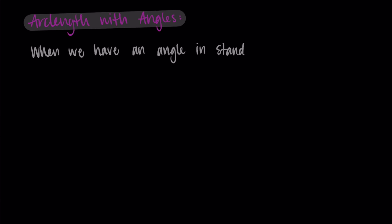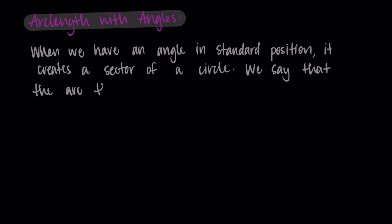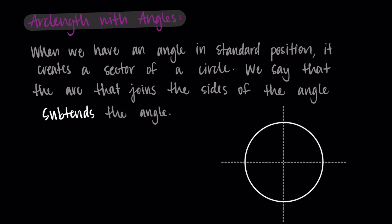So when we have an angle that is in standard position, we can think of it as creating a sector of a circle. Then we say that the arc that joins the initial side and the terminal side of the angle subtends the angle. So subtends is like the verb we're using to describe that arc that goes from one side to the other. So if we think about our circle here, we have the initial side, it draws out to the terminal side, and this area is a sector of the circle.